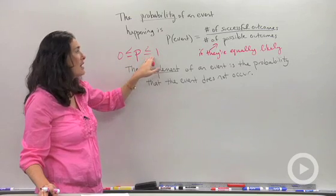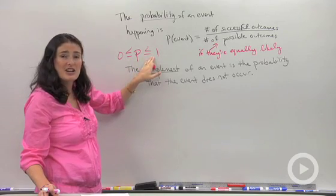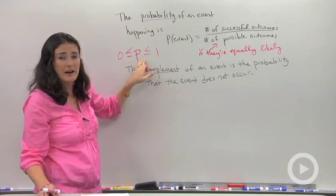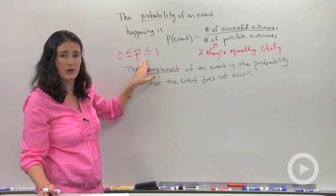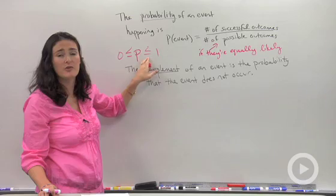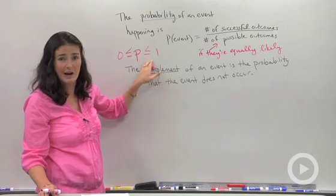It might equal 0, it might equal 1. So you're either going to have a decimal, a fraction, or a percent as your final answer. It's really important that you're comfortable moving through all three of those different representations of your answer numbers.